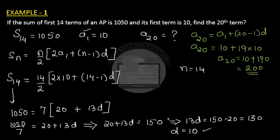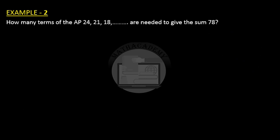To summarize Example 1: we used S(14) to determine the common difference D = 10, and since we knew both D and the first term, we found the 20th term to be 200. Now let us look at one more example.